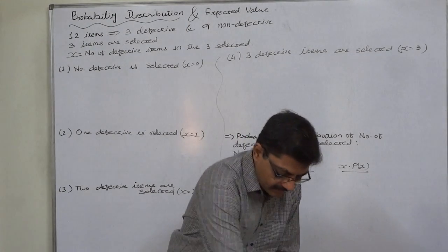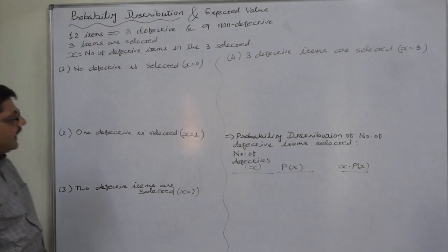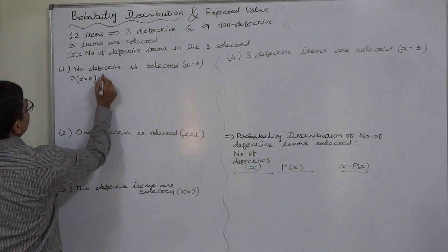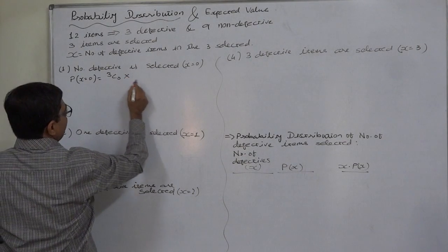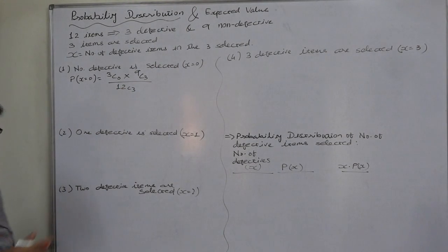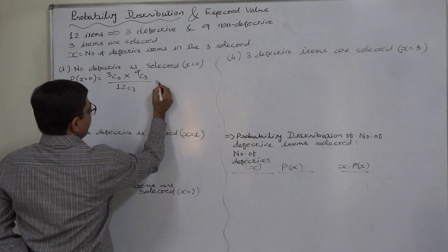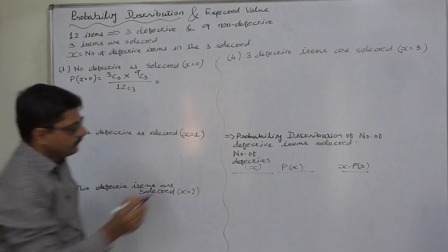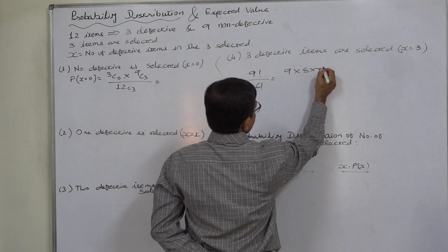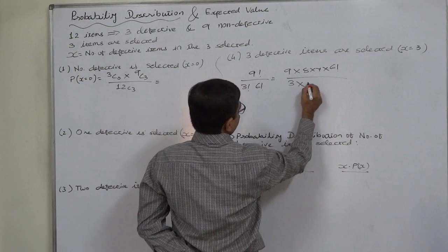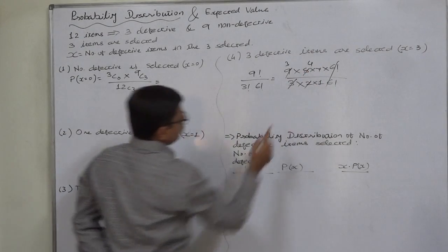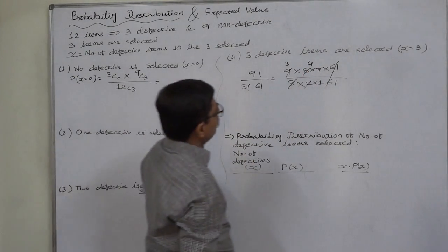Let us calculate the probability of all four possible mutually exclusive and exhaustive outcomes. For no defective items selected, the probability will be 0 defectives out of 3 and all 3 out of 9, giving 9C3 divided by 12C3. 9C3 simplifies as 9 factorial upon 3 factorial times 6 factorial, which equals 9 × 8 × 7 divided by 3 × 2 × 1, giving 84.